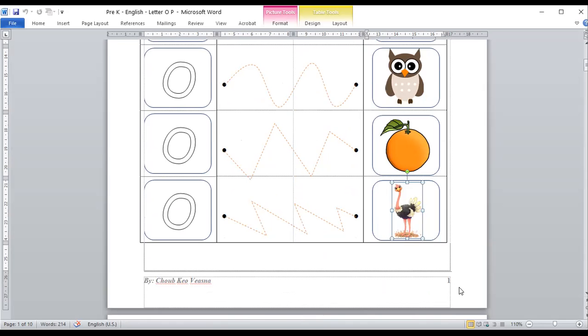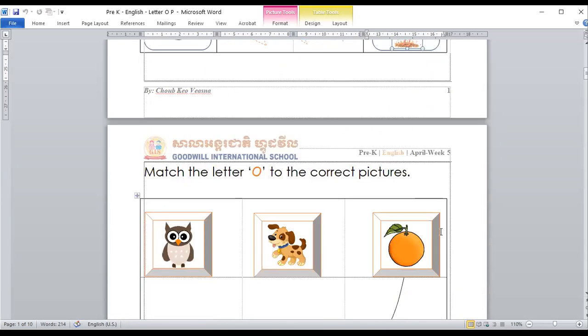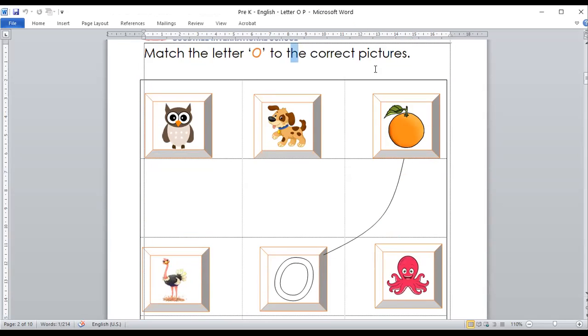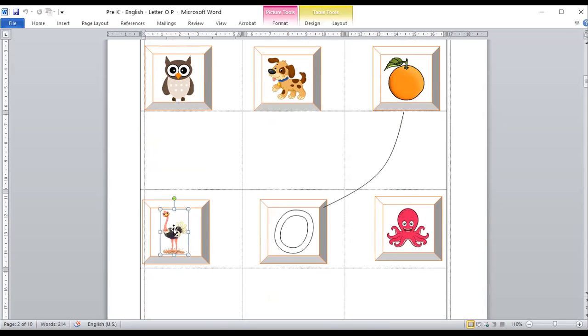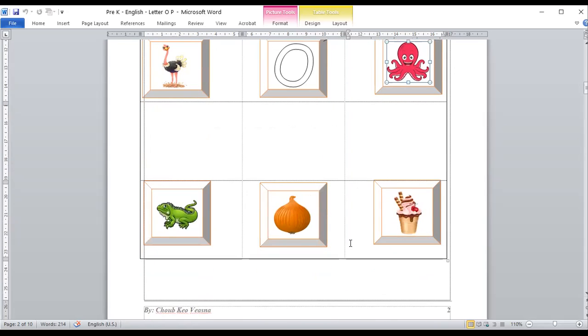Okay. You have done the first page now. Next. Second page. Oh, it asks you to match the letter O to the correct picture. O is for orange. Is O for a dog? No. Is O for an owl? Yes. Let's match. Is O for an ostrich? Yes. Is O for an octopus? Yeah. Let's match. Is O for this one? This is called iguana. Is O for iguana? No. It's not for iguana. It's letter I for iguana, not O. Is O for onion? Yes. How about ice cream? Is O for ice cream? No. So we can't match to ice cream.